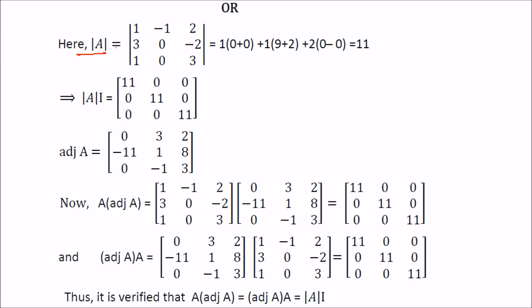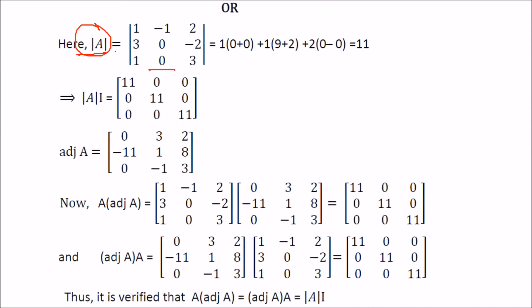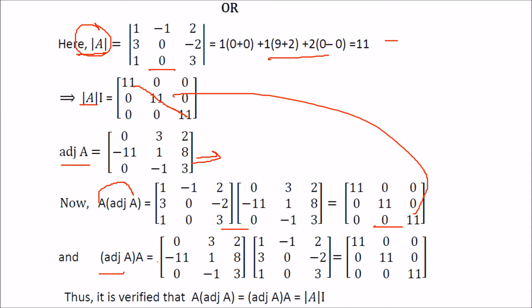The second option requires verifying that A times adjoint A equals adjoint A times A equals mod(A) times I. We compute the determinant of A to find mod A equals 11. After multiplying A with adjoint A and adjoint A with A, both results match 11 times I, thus verifying the identity.